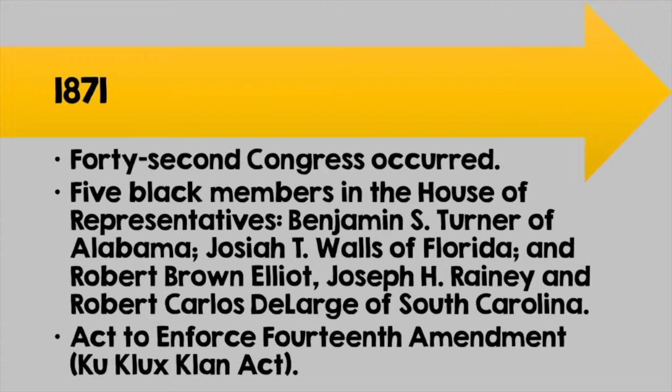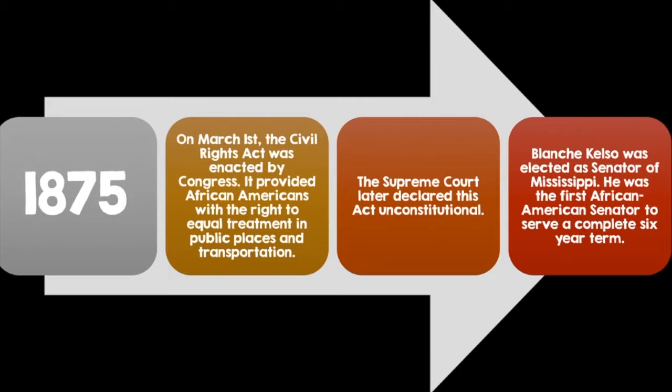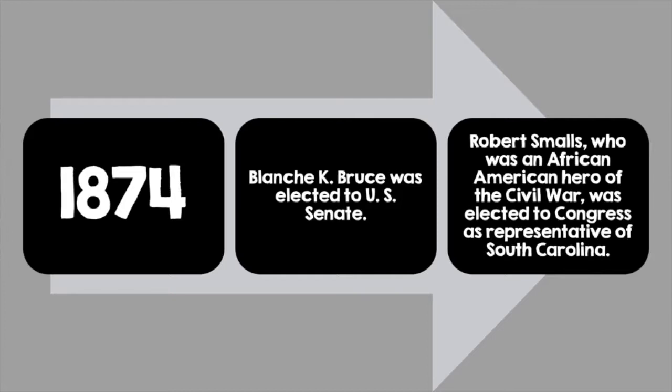In 1872, the Freedmen's Bureau was unfortunately abolished. In 1875, on March 1, the Civil Rights Act was enacted by Congress, providing African Americans with the right to equal treatment in public places and public transportation. The Supreme Court later declared this act unconstitutional. Blanche Kelso was elected as a senator in Mississippi — the first African American senator to serve a complete six-year term. In 1874, Blanche K. Bruce was elected to the United States Senate. Robert Smalls, an African American hero of the Civil War, was elected to Congress as a representative of South Carolina.